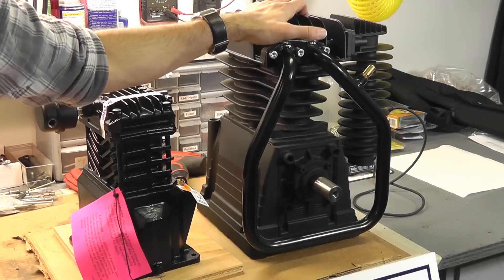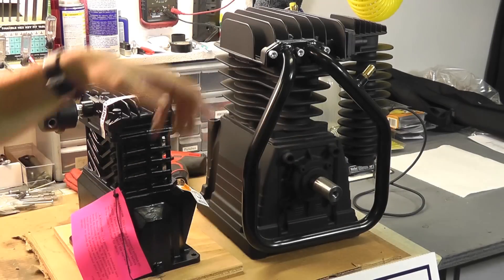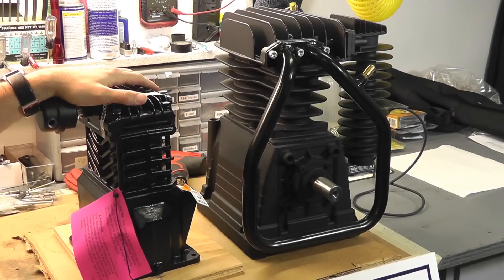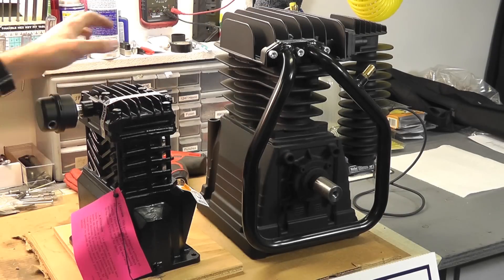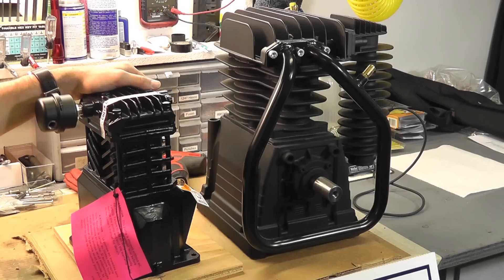If not, you can find single-stage and two-stage compressors on our website. At the top tab, it's generic air compressor parts. And then we have a section called pumps. And we list them by single-stage and two-stage. And the CFM ratings, PSI ratings, dimensions, specifications, all kinds of great information on those pages under specs.